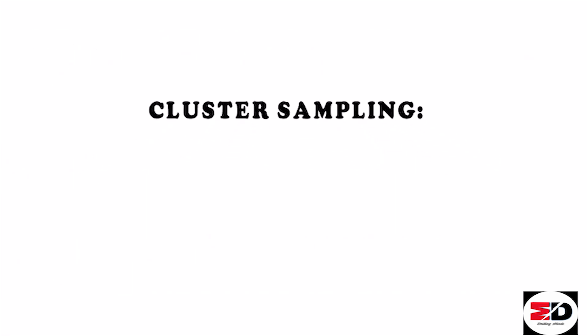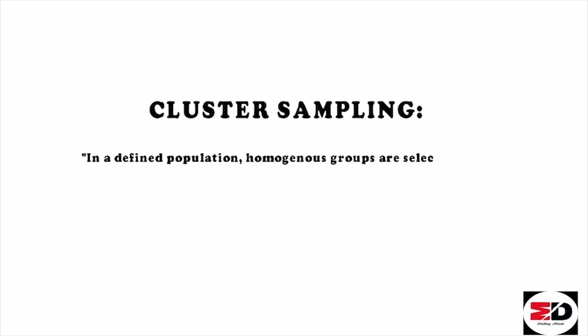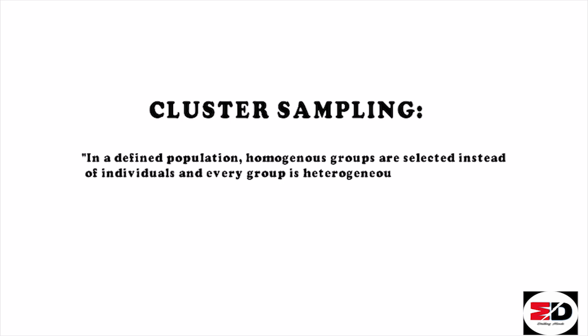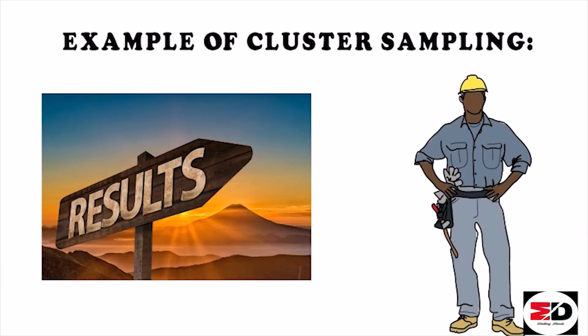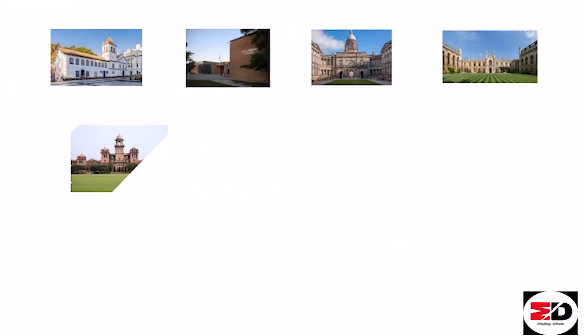Cluster sampling: in a defined population, homogeneous groups are selected instead of individuals, and every group is heterogeneous internally. In this technique, the researcher divides the population into clusters that share some similarity. For example, we want to examine the board exam results of engineering students across our country using only 5 clusters.